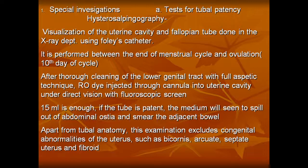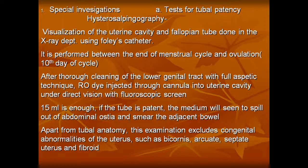After thorough cleaning of the lower genital tract with full aseptic technique, radio-opaque dye is injected into the uterine cavity under direct vision with a fluoroscope screen. If the tube is patent, the medium is seen to spill out of the abdominal ostium. Apart from tubal anatomy, this examination excludes congenital abnormalities of the uterus such as bicornuate uterus, arcuate, septate uterus, and fibroids.